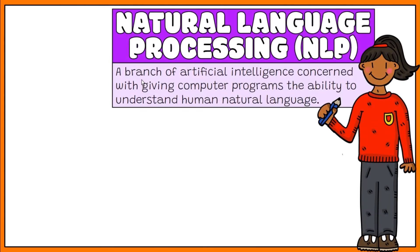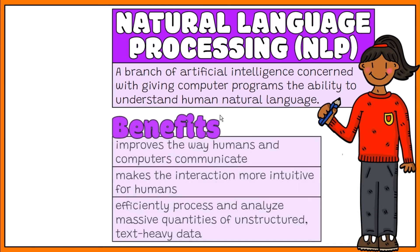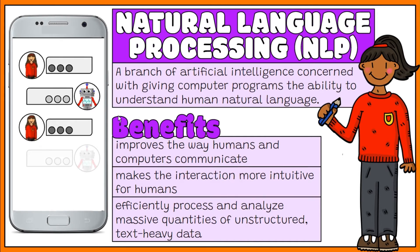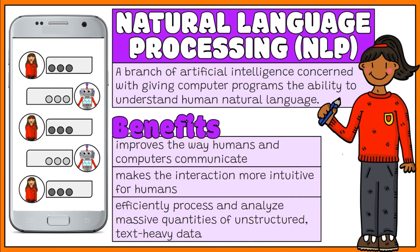Natural Language Processing, or NLP, is a branch of artificial intelligence concerned with giving computer programs the ability to understand human natural language as it is spoken and written. NLP improves the way humans and computers communicate with each other. It makes interacting with computers much more intuitive for humans. It is important to efficiently process and analyze massive quantities of unstructured, text-heavy data in human language that are created online and stored in databases.